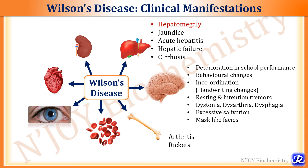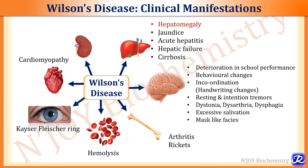When it affects the bone, it results in arthritis and rickets. RBC breakdown — hemolysis — also occurs in Wilson's disease. There is deposition of copper in the cornea, causing Kayser-Fleischer rings. Copper affecting the heart results in cardiomyopathy and arrhythmias, and in the kidney it results in proximal renal tubular dysfunction.